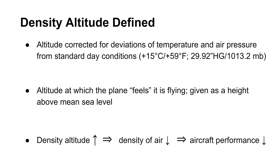The term density altitude refers to altitude corrected for deviations of temperature and atmospheric pressure from the standard day condition. In layman's terms, it is the actual altitude at which the plane feels it is flying, and is given as a height above mean sea level.